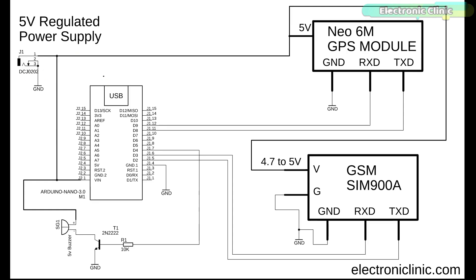All the electronics are powered using a 5-volt regulated power supply — make sure it is around 2A. The RXD and TXD pins of the GSM SIM900A module are connected with the Arduino's pins D3 and D2. The RXD and TXD pins of the Neo 6M GPS module are connected with Arduino's pins D9 and D8 respectively.